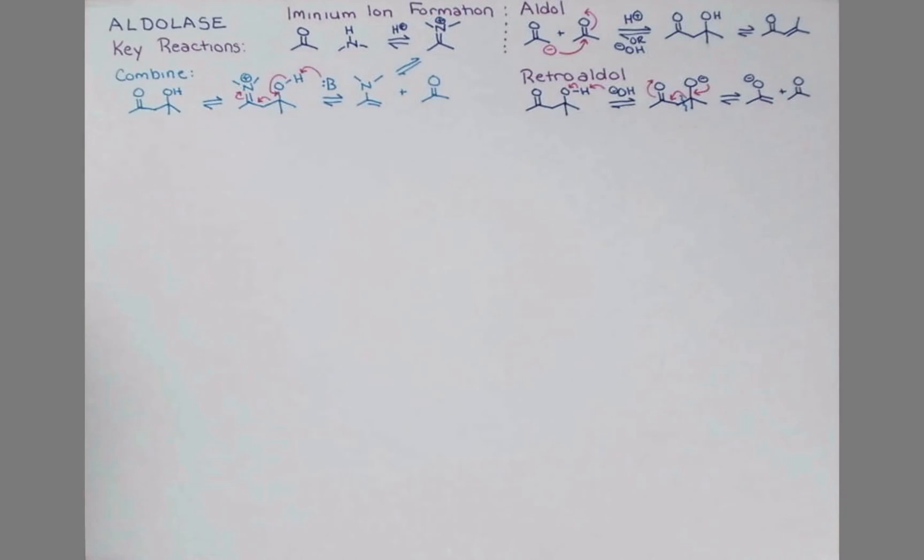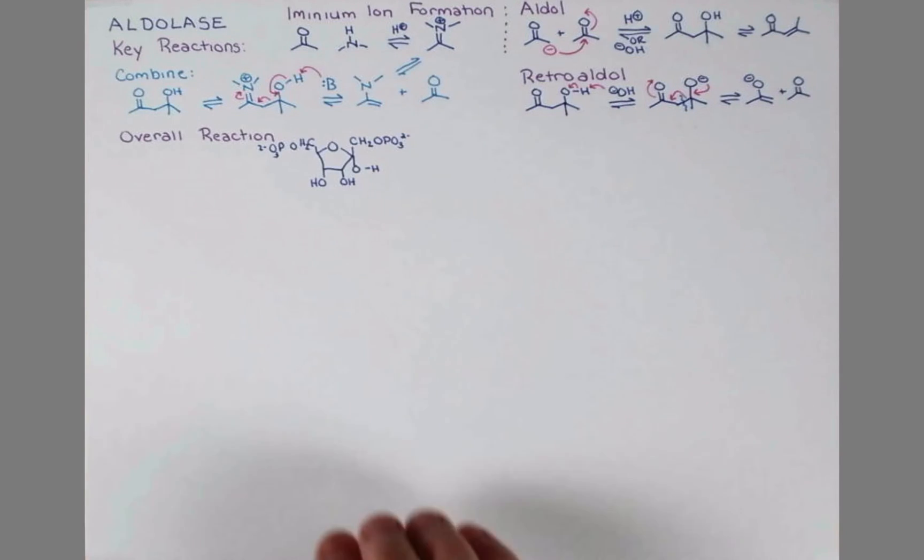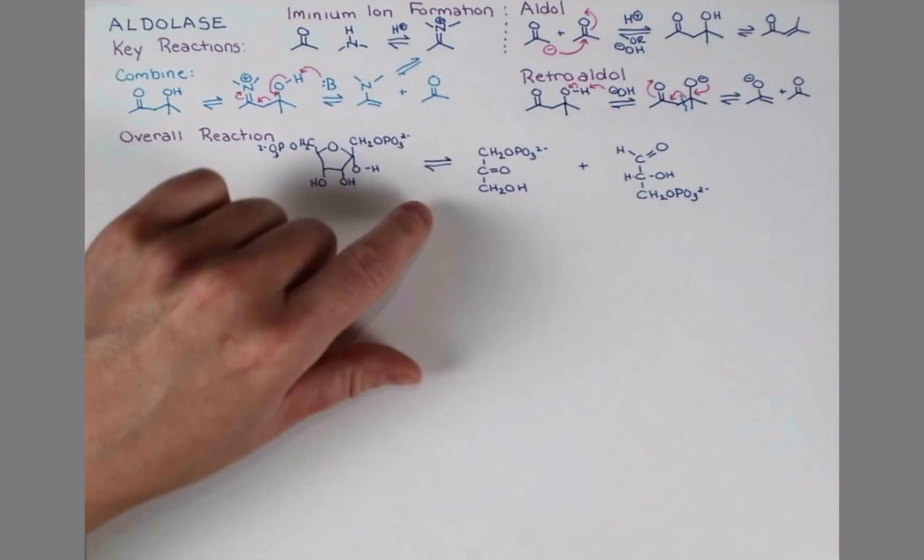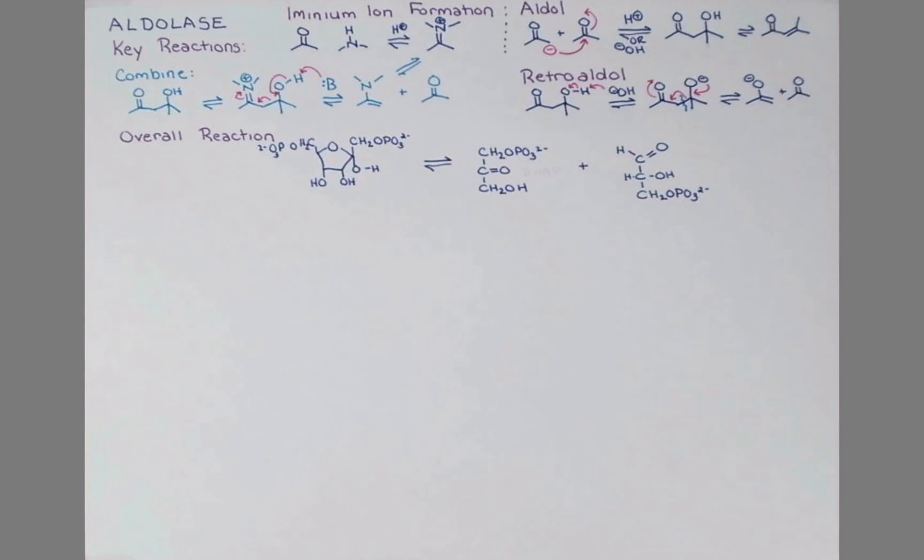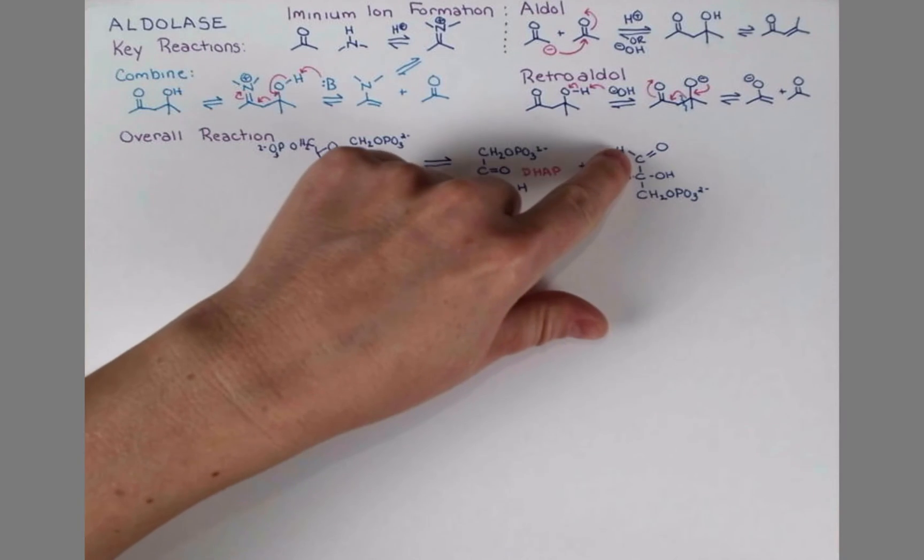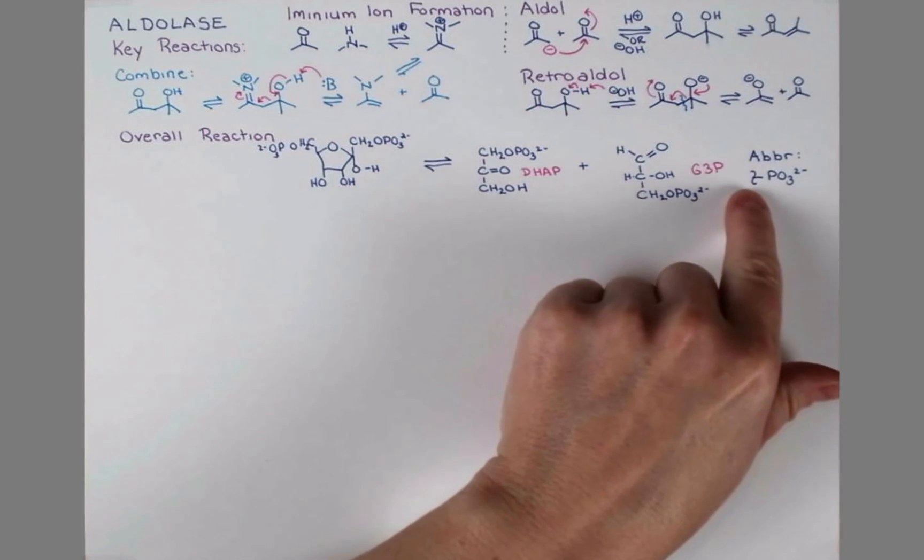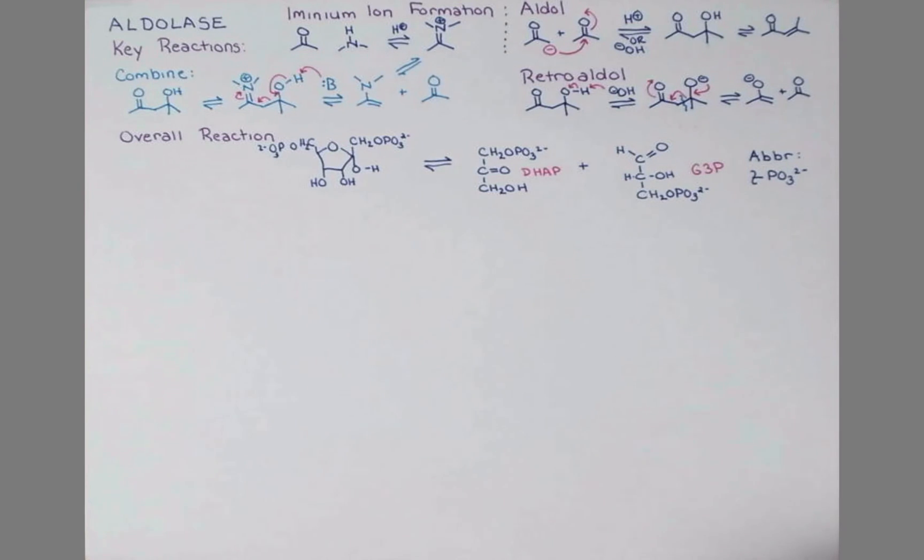Getting back to aldolase, let's take a look at the overall reaction that this enzyme catalyzes. Fructose 1,6-bisphosphate is going to be cleaved into two 3-carbon compounds, dihydroxyacetone phosphate, or DHAP, and glyceraldehyde 3-phosphate, which we'll call G3P. I'm going to abbreviate the phosphate group. So in our mechanism, we'll abbreviate this. Anywhere that the phosphate group is hanging off of the organic molecule, we'll show this.